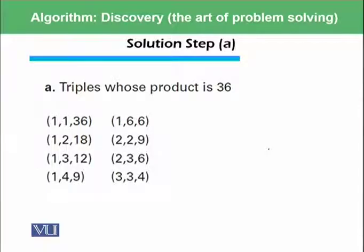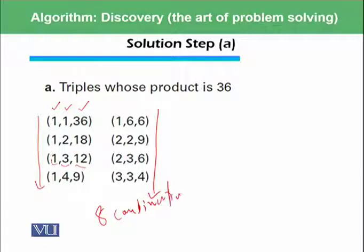First, we need to make all of the combinations which gives 36: (1,1,36), (1,2,18), (1,3,12), and so on. We have found eight combinations, and these eight combinations are all possible combinations of three values which can give the product as 36.